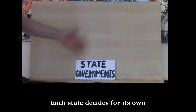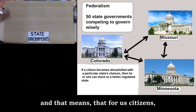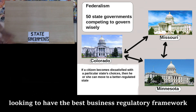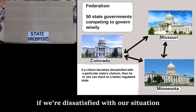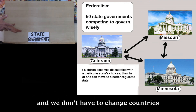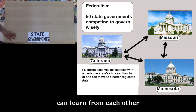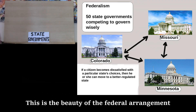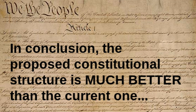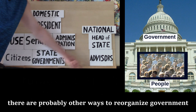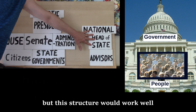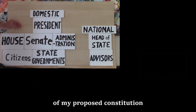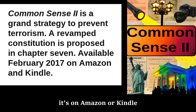The idea of a federal arrangement is that each state decides for itself, meaning there are 50 separate states competing to attract citizens by having the best business and regulatory framework. This gives citizens huge freedom — if dissatisfied, you can move to a better-regulated state without changing countries. State governments can also learn from each other. Overall, this is one structure, and there are probably other ways to reorganize government, but this would work well for 21st-century America. This is a brief outline of my proposed constitution, elaborated more in-depth in my book Common Sense 2, available on Amazon or Kindle. Thank you for listening.